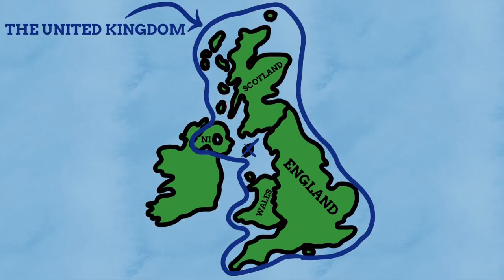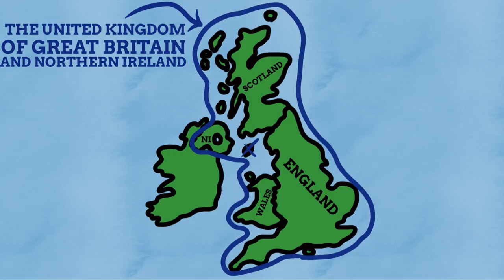The United Kingdom is the country that is made up of these three smaller countries, as well as Northern Ireland over on the island of Ireland. Hence why the UK's full name is the United Kingdom of Great Britain and Northern Ireland, as those two titles encompass all the nations that make up the UK.